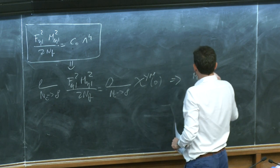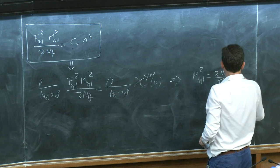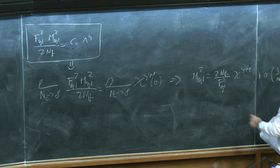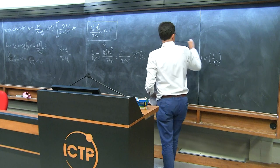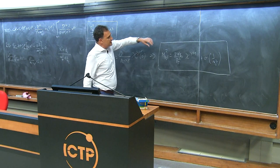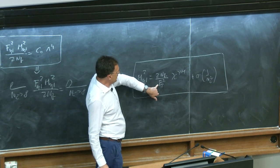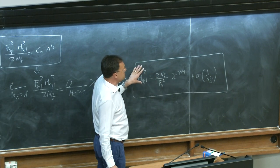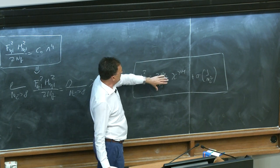We can therefore write: lim_{N_c→∞} f_{η′}² m_{η′}² / (2N_f) = lim_{N_c→∞} χ_{YM}(0). This gives m_{η′}² = 2N_f / f_{η′}² × χ_{YM}, up to 1/N_c² corrections. In the large-N_c limit, f_{η′} = f_π, so we can replace it with f_π. This is the Witten-Veneziano formula.